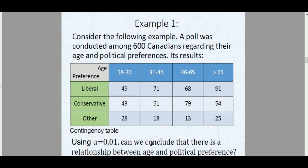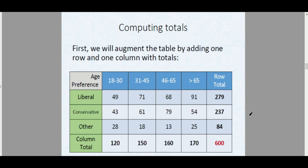In other words, can we conclude that age and political preference are dependent on each other? Let's use chi-square hypothesis testing for independence. But first, let's complete our contingency table by adding a row total — which is horizontal — and a column total at the bottom.